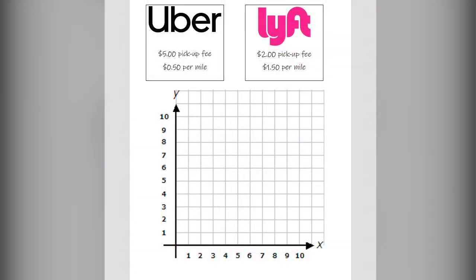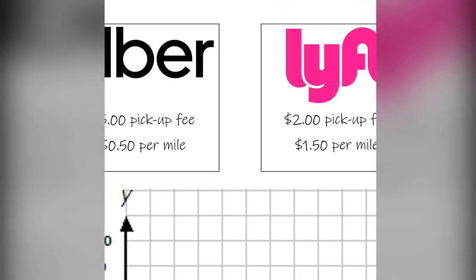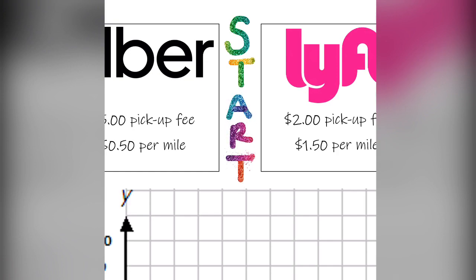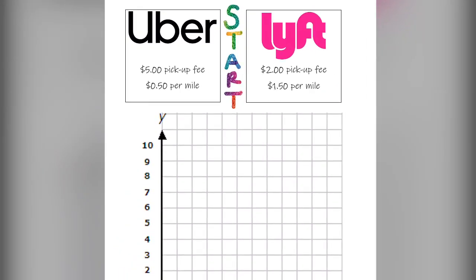Now that I've written the equations, I can go ahead and graph. We're going to use the starting point. Looking at Uber, I know that Uber will charge me $5 the moment I order, so I start on the y-axis at 5. From there, I move at a rate of $0.50 per mile — up $0.50, over one mile — repeating until I have enough points to create my line.